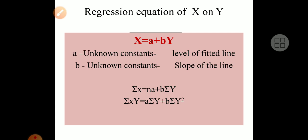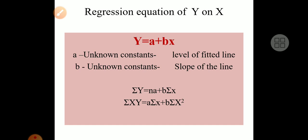Regression equation of x on y: x equals small a plus small b times capital Y, where a is an unknown constant (level of the fitted line) and b is an unknown constant (the slope of the line). Normal equations: summation x equals na plus b times summation y; summation xy equals a times summation y plus b times summation y-squared. Regression equation of y on x: y equals a plus bx, with normal equations: summation y equals na plus b times summation x; summation xy equals a times summation x plus b times summation x-squared.